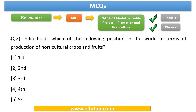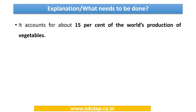Question number two: India holds which position in the world in terms of production of horticultural crops and fruits? The answer is second. A small question for you: which country stands first in the world in terms of production of horticultural crops and fruits? Kindly find it out and mention it in the comment section below. India accounts for about 15% of the world's production of vegetables.